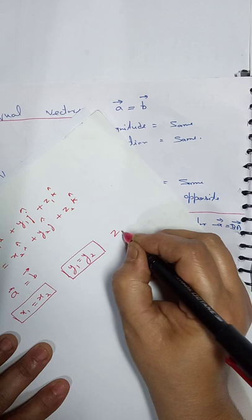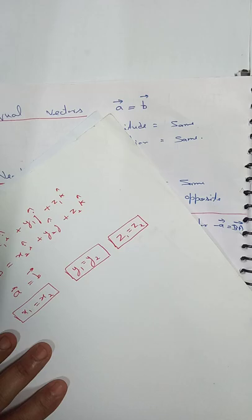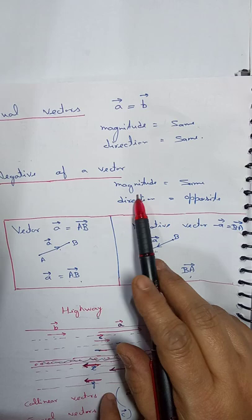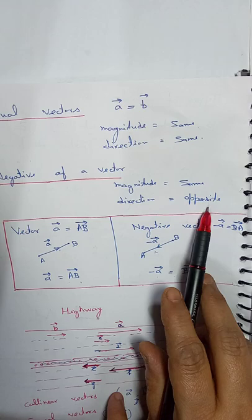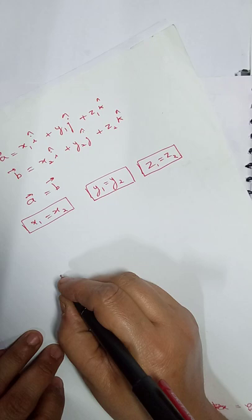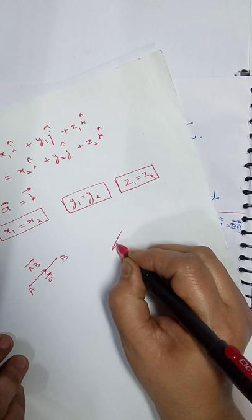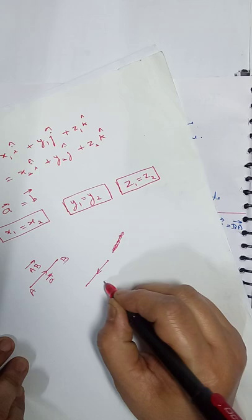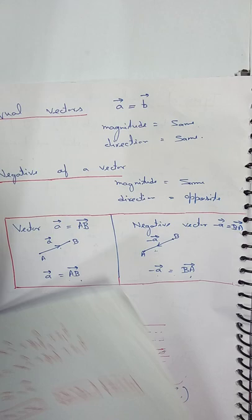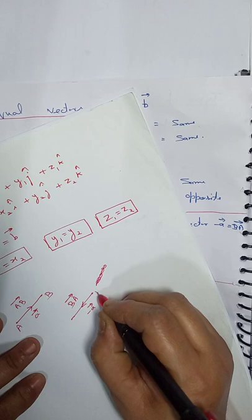Negative vectors have the same magnitude but opposite direction. If vector AB is in this direction — vector A — then the negative vector of this is minus A, or we can say vector BA, because the initial point is now B.